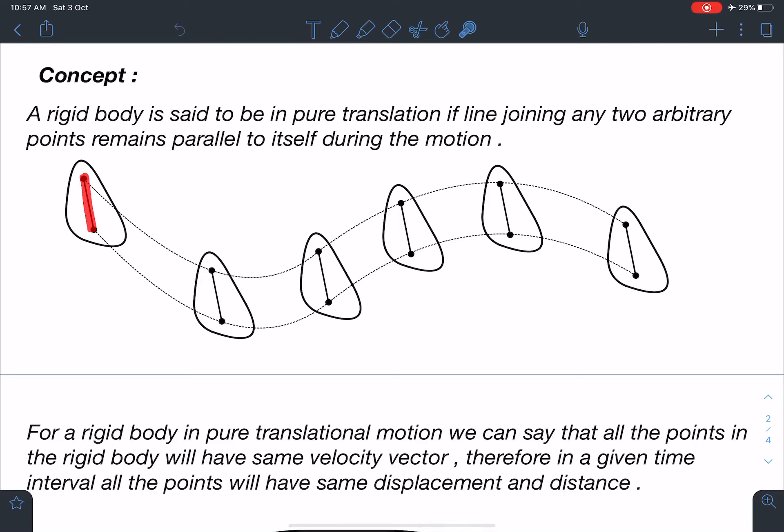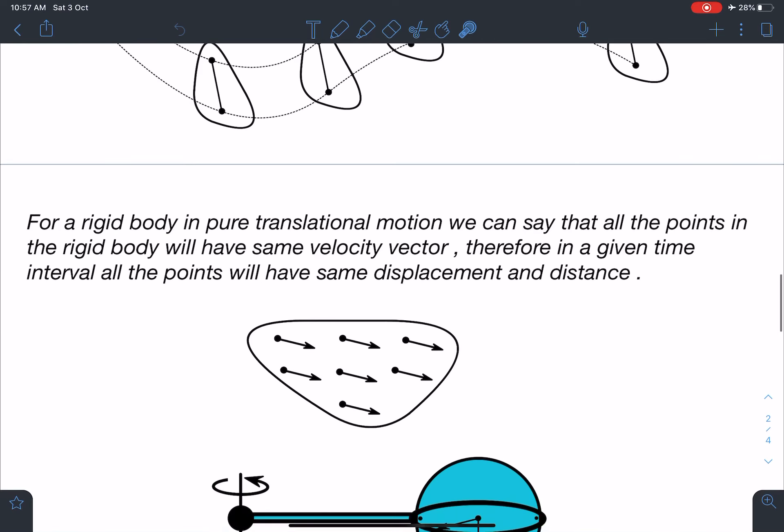The line joining these two any arbitrary points, if it is parallel to itself during the motion, in that case we can say that motion is pure translation and there is no rotation part in this.